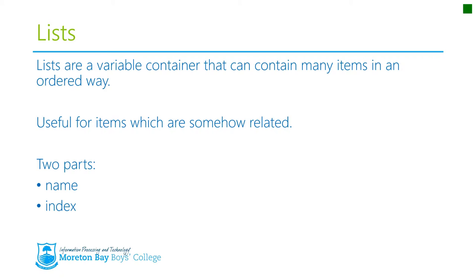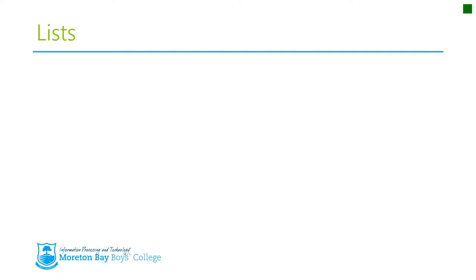Lists have two parts: they have a name and they have an index — just keep that in mind for now. We'll learn more about how you use names and indexes in our next lesson. Lists contain a group of different values and they're stored in an ordered way and collected together.